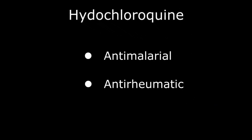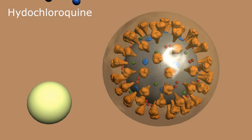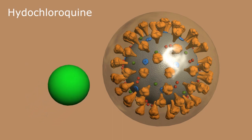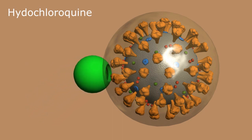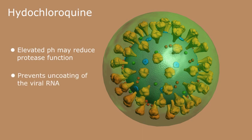Hydroxychloroquine, or Plaquenil, an antimalarial and anti-rheumatoid medication, appears to accumulate in lysosomes of our cells, raising the pH from the acidic 4 to a more neutral 6. The proteases and other enzymes in the lysosome function optimally in the acidic environment. The elevated pH may reduce the function of these chemicals, preventing uncoding of the viral RNA and essentially entombing the particle in the endosome.